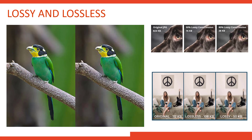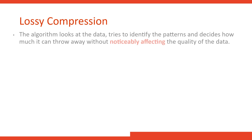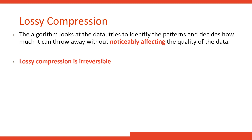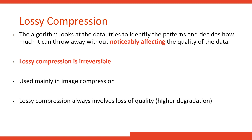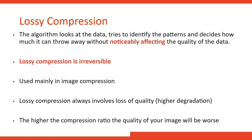Lossless compression is all about rebuilding the file in its original state — you don't actually lose any bits. The algorithm looks at the data, identifies patterns, and decides how much it can throw away without noticeably affecting quality. Lossy compression is always irreversible: once compressed, you can never get those pixels or that data back again. It's used mainly in image compression, though it can be used in sound and video as well, and always involves a loss of quality.